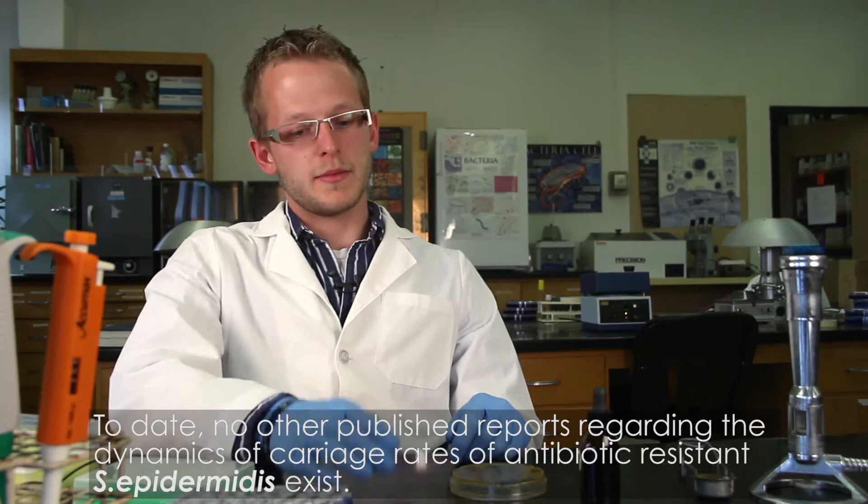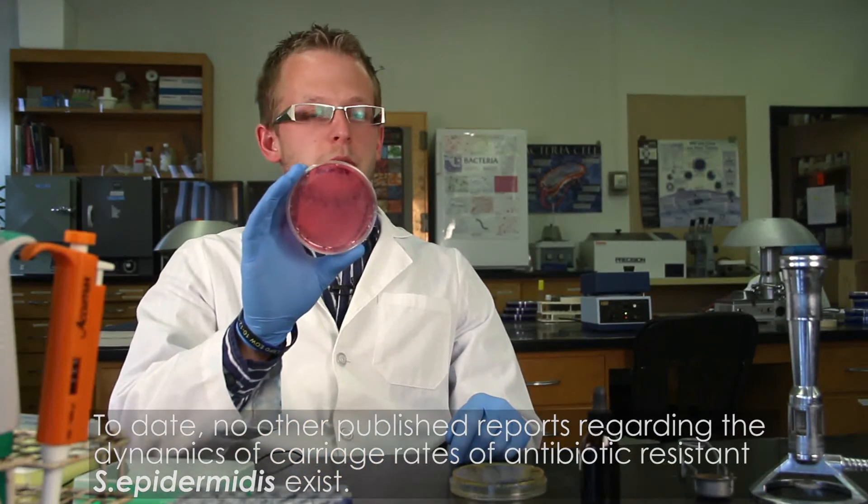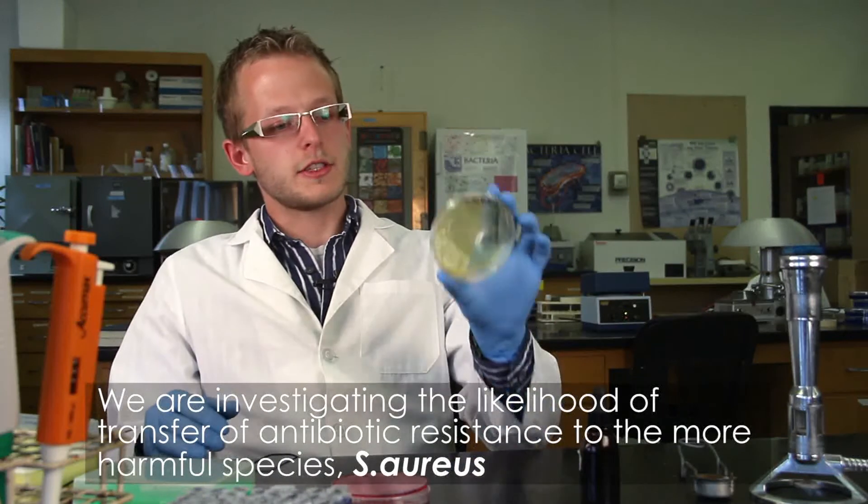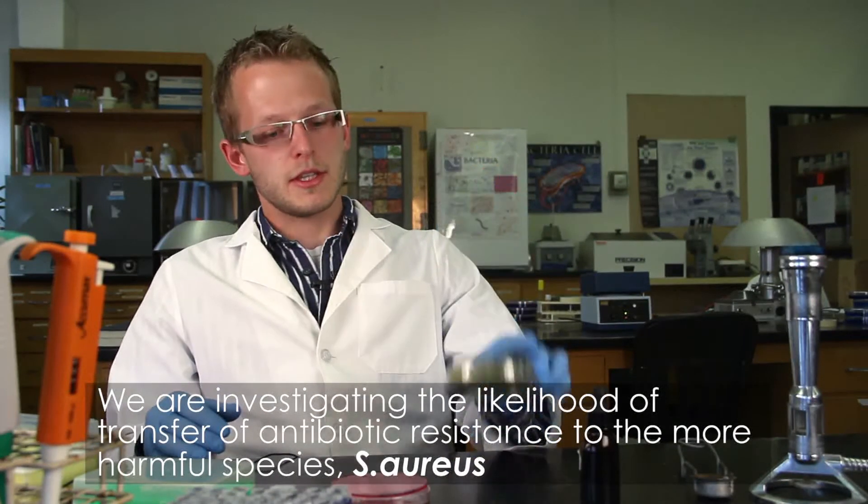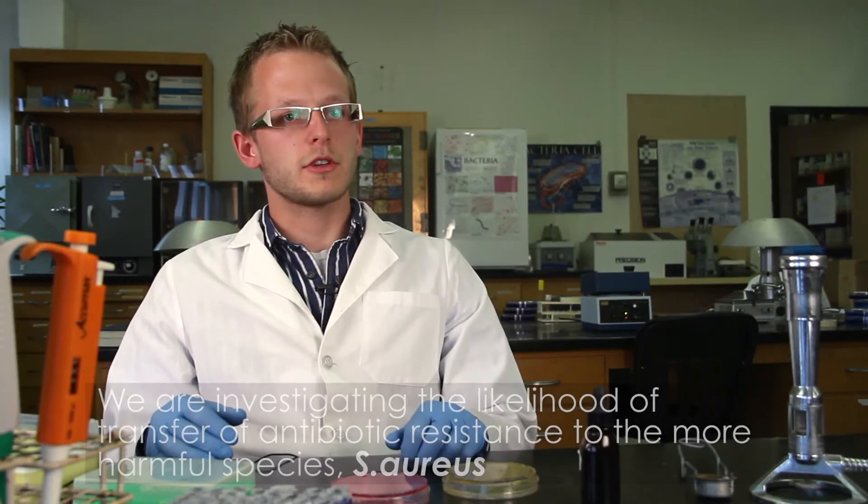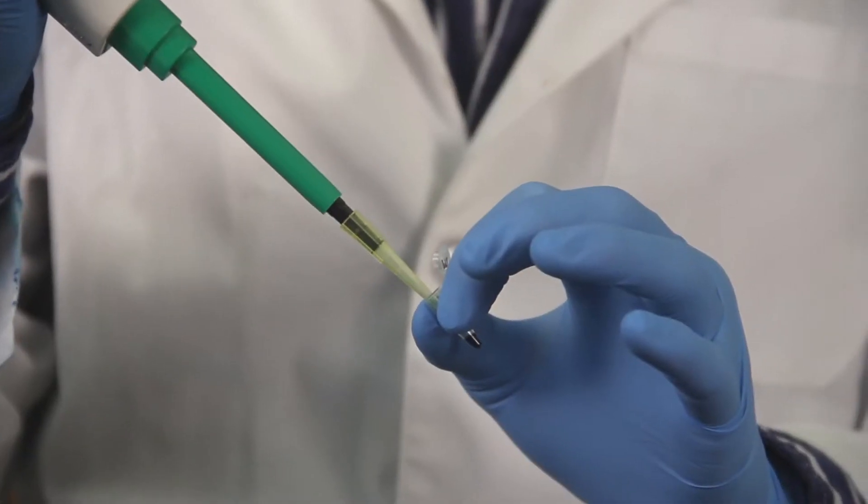The first of which is Staph epidermidis, which is shown by this pink plate, and Staph aureus, which comes up yellow on these plates. Both of these plates are mannitol salt agar plates and allow us to differentiate between the two bacteria.